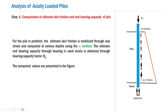For the given problem, the ultimate end bearing capacity through the bearing in sand strata is obtained through the bearing capacity factor NQ. The computed values for the problem pile are shown in the figure. The skin friction is mobilized along the pile shaft at the pile-soil interface. Near the pile tip, the skin friction is 41.7 kN per meter, and this gradually reduces towards the surface, where we have calculated the skin friction of the order of 12.8 kN per meter. The end bearing resistance computed is 2400 kPa against the medium dense sand.